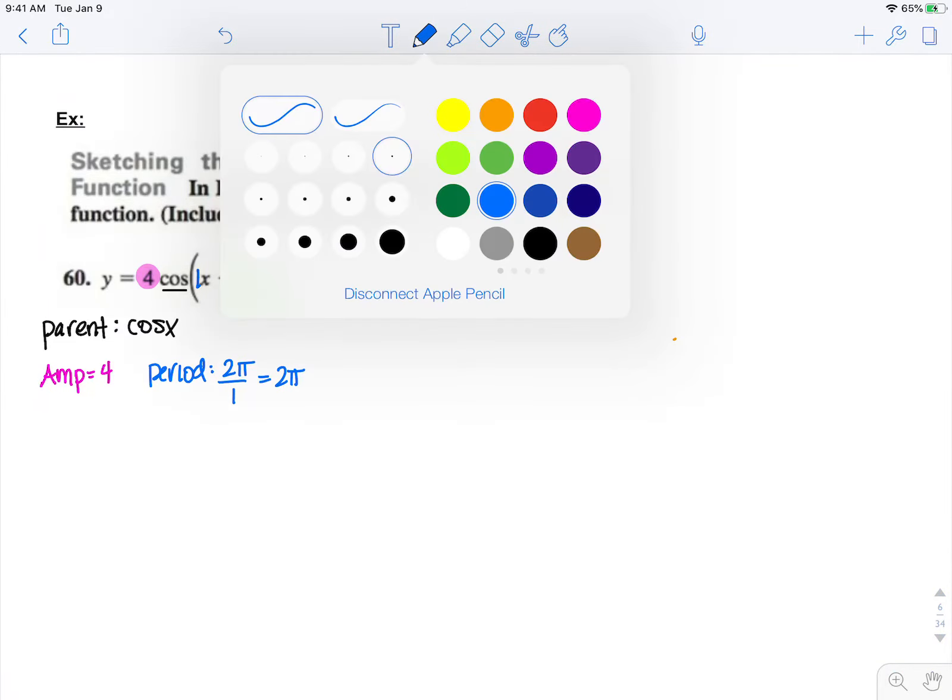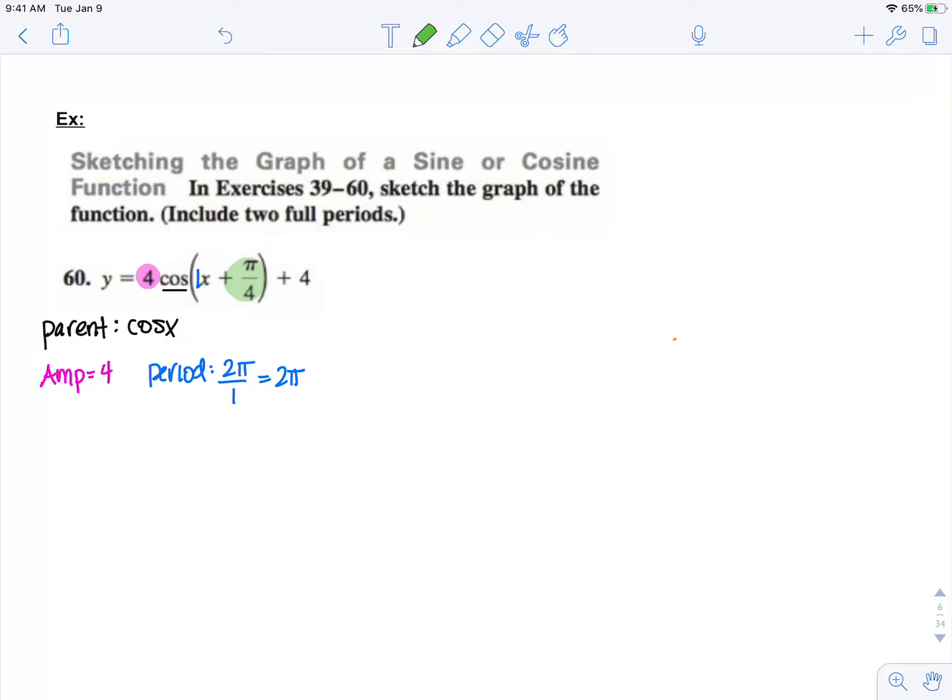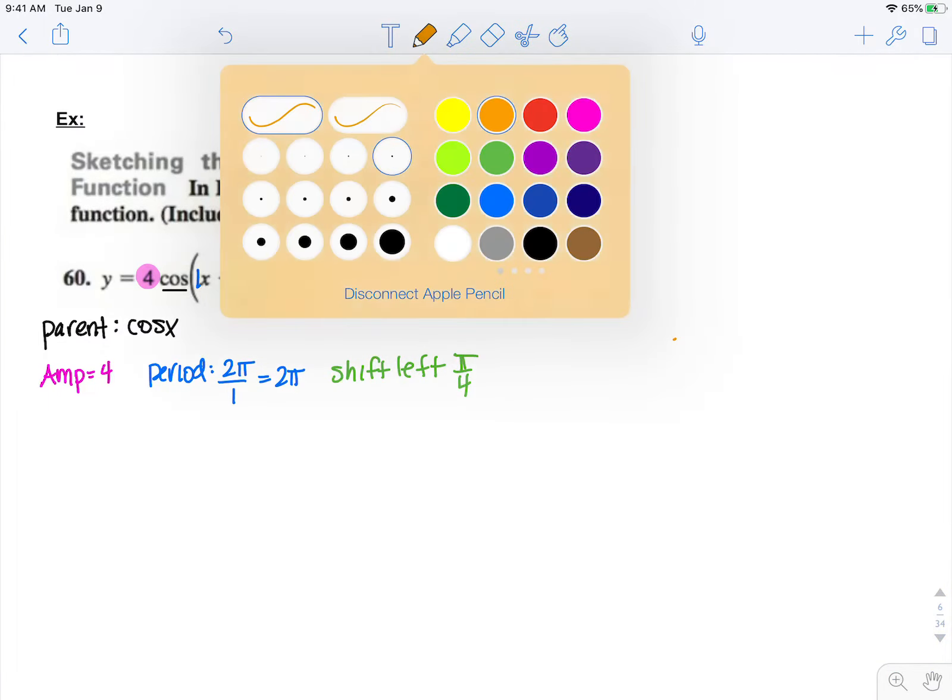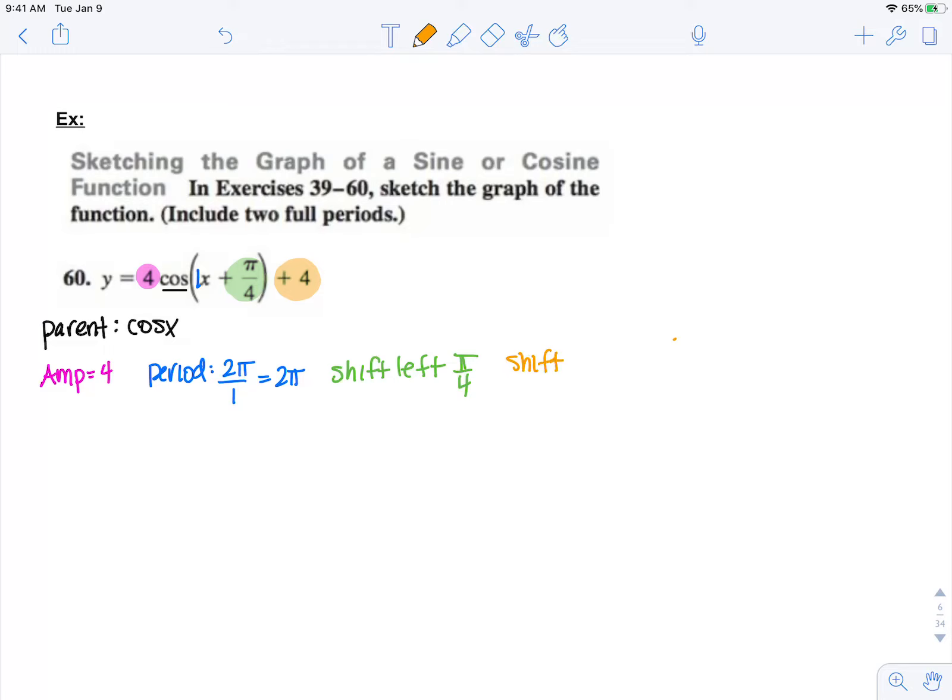Adding pi over 4 to my x means that we shift left pi over 4 units, and adding 4 on the end means that we shift up 4 units.